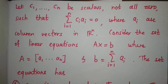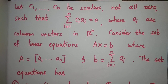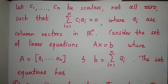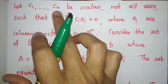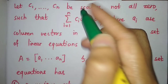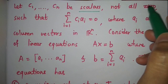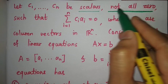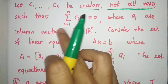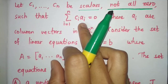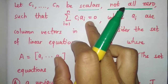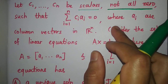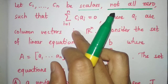Hello friends. In this video I am going to solve a question from Gate 2017. Let c1, c2, ... up to cn be scalars, not all zero. That means there exists some ci which is not zero, such that the summation ci*ai, where i runs from 1 to n, is equal to 0, where the ai's are column vectors in R^n.